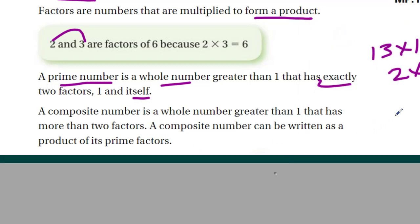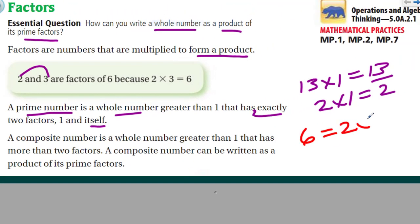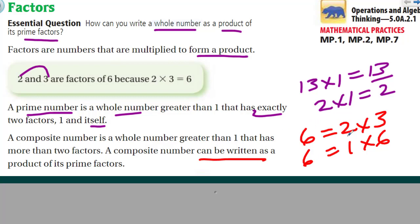Let's take the number six. Six is two times three. Six is not a prime number because we can also find two other factors — one times six, which equals six. Therefore, the factors of six are one, two, three, and six. It has four factors. However, it can be written as its prime factors: two and three. Both two and three are prime numbers — they each have exactly two factors.